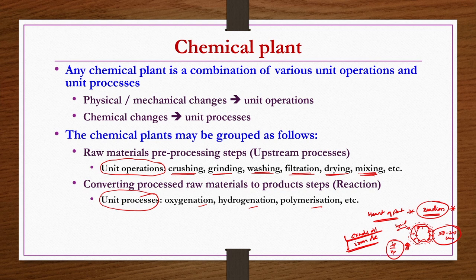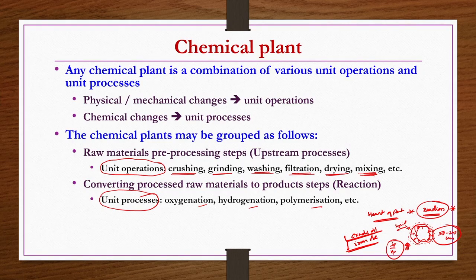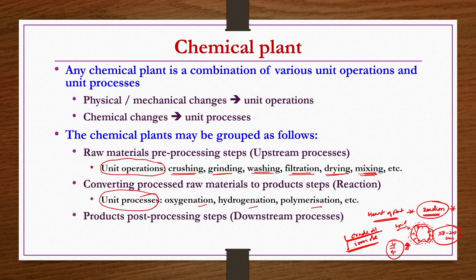Whatever the purity of the raw material, temperature, pressure, and catalyst selection, it is not possible to have 100% conversion in general. There would be some unreacted reactants or byproducts as impurities along with the desired product. These have to be separated out because the consumer's requirement is a specific product only, not byproducts or unreacted reactants. This post-processing is called downstream processes.